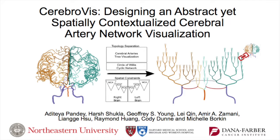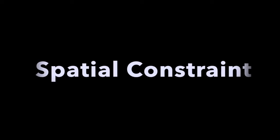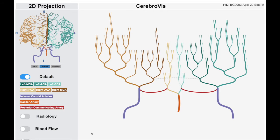We present Cerebral Vis, an abstract representation of the cerebral artery network. In Cerebral Vis, we impose spatial constraints on the network layout.